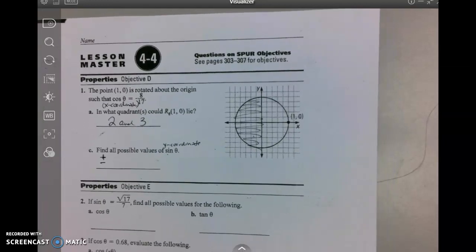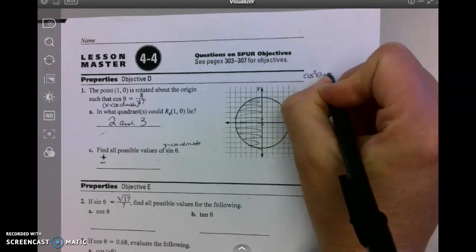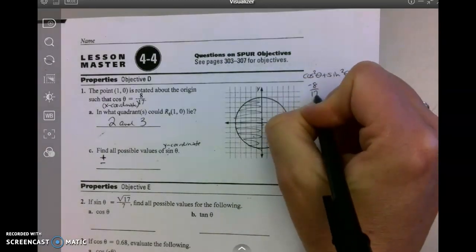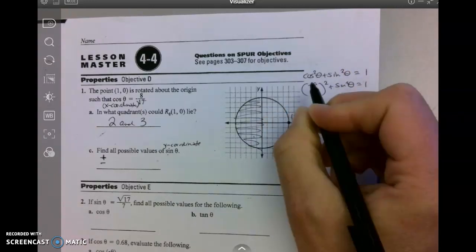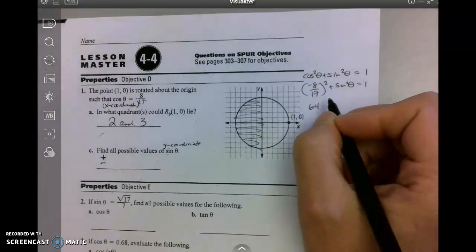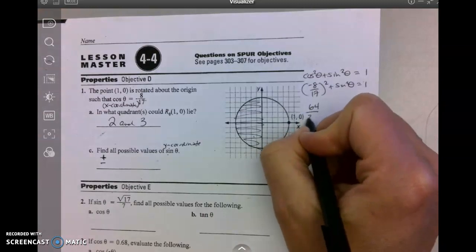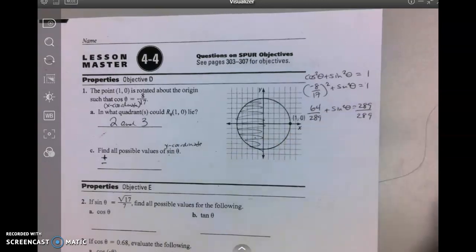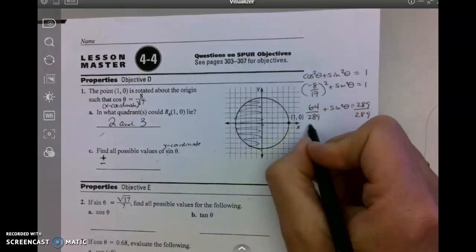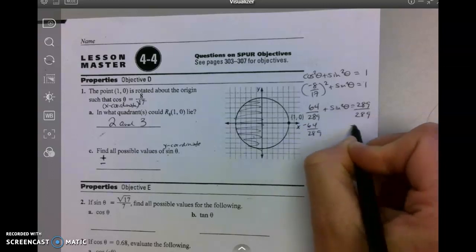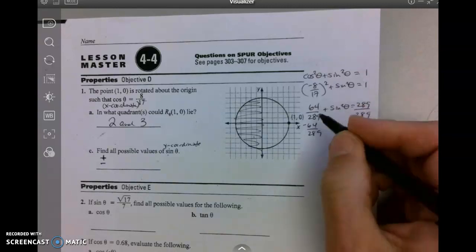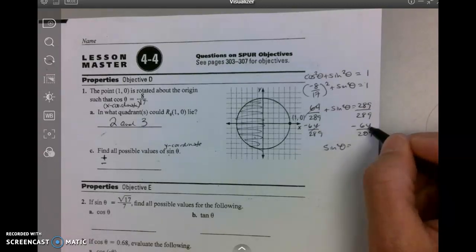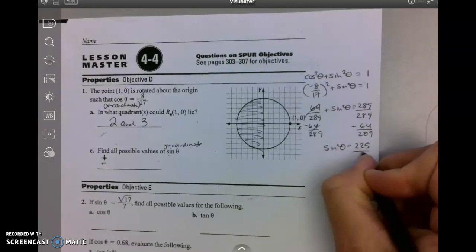Now I'm going to use my Pythagorean identity theorem. So cosine squared plus sine squared equals one. Let's see, the cosine is negative 8/17, so that's (-8/17)² plus sine squared equals one. So I get 64 divided by 17 squared, which is 289, plus sine squared equals 289/289. I'll show that step, and I get sine squared equals 289 minus 64, which is 225 over 289.